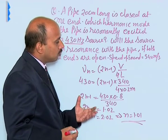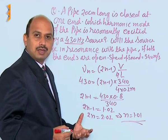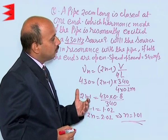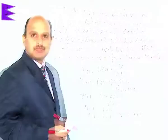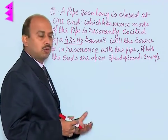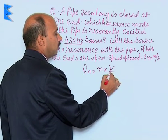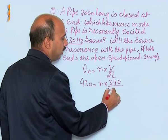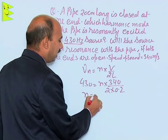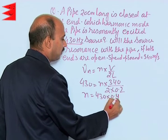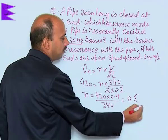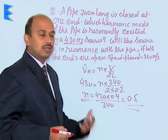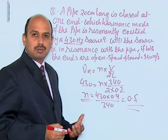Now, if the pipe is open from both ends, the frequency formula becomes ν_n = n × V / (2L). Substituting: 430 = n × 340 / (2 × 0.2), giving n = 430 × 0.4 / 340 = 0.5. Since n must be an integer, n = 0.5 means there is no resonance condition when both ends of the pipe are open.